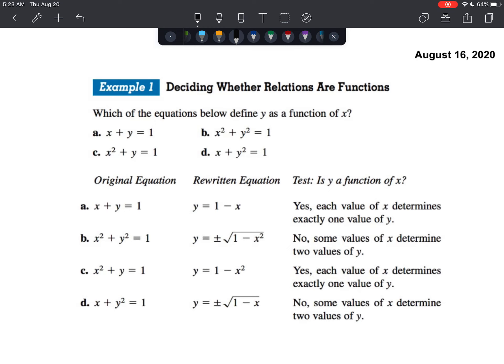So in number 1, we know that number 1, or 1a, this right here, is a linear function. A linear function is indeed a function. This creates a line in which its graph passes the vertical line test.